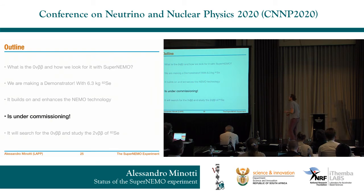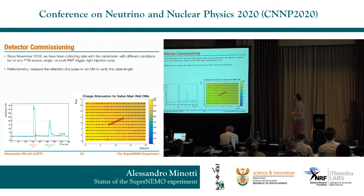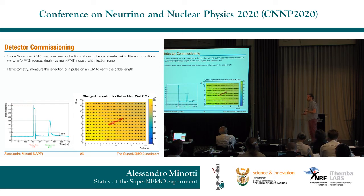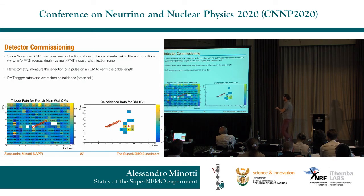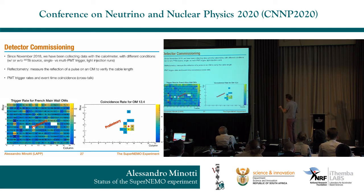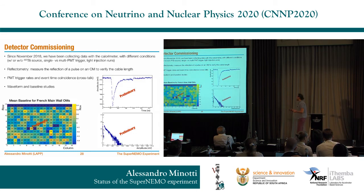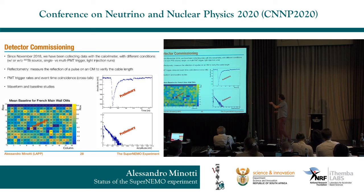Now some commissioning data. Since November 2018, we have been taking data with the calorimeter and analyzing it. These are some preliminary results. You can see, for example, the attenuation of charge sent to optical modules to check cable length and optical module response, trigger rates from the main wall, a study of coincidences and electronic crosstalk between optical modules, equalization of baselines, and examples of waveforms in photomultipliers and the amplitude of events.